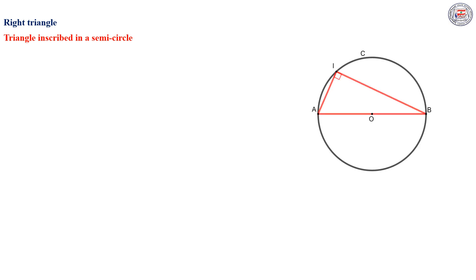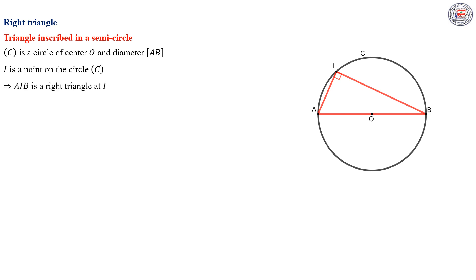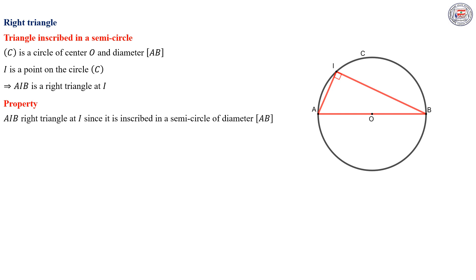Another property concerning right triangles is the triangle inscribed in a semicircle. If C is a circle of center O with diameter AB, and I is a point on the circle, then we can deduce that AIB is a right triangle at I, since it is inscribed in a semicircle of diameter AB.